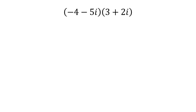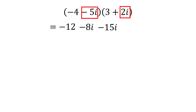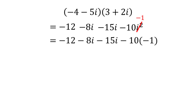Let's try multiplying complex numbers. We have negative 4 minus 5i times 3 plus 2i. We can FOIL this out, which gives us negative 12 for the first terms, negative 8i for the outer terms, negative 15i for the inner terms, and negative 10i squared for the last terms. We know that i squared is equal to negative 1, so we can rewrite this as negative 12 minus 8i minus 15i minus 10 times negative 1.